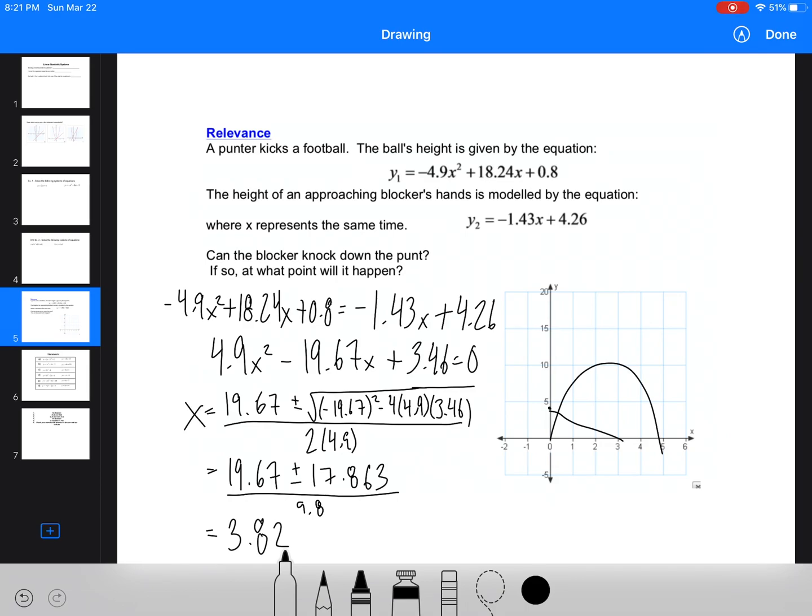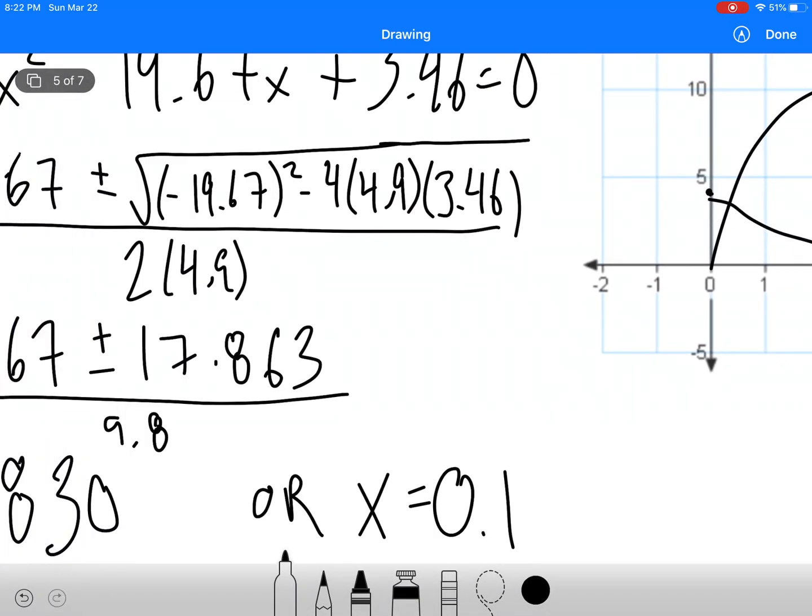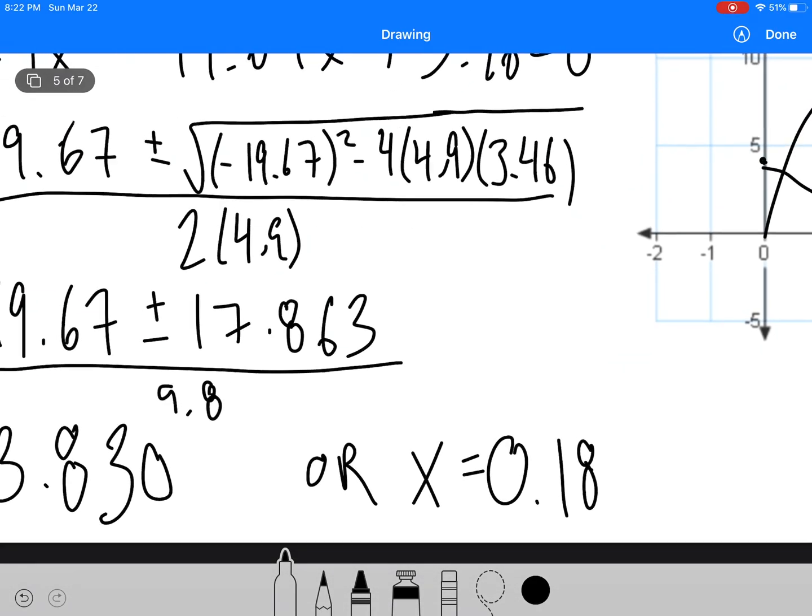divided by 9.3, divided by 9.8, so we get 3.8. So we get 3.82, 3.83 we'll call it. Or I've got to do the minus, 19.67 minus 17.863 divided by 9.8. That's 0.18. Oh boy. So 0.18.